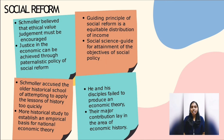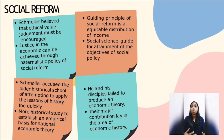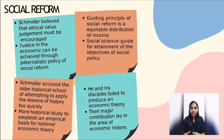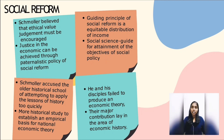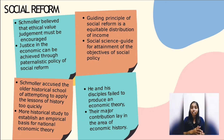Regarding social reforms, Schmoller believed that ethical value judgments are to be encouraged. Justice in the economic system is to be realized through a paternalistic policy of social reform furthered by the state and all social groups, with the guiding principle being more equitable distribution of income. Social science is to be the guide for attaining the objectives of social policy. Schmoller accused the older historical school of attempting to apply the lessons of history too quickly and called for much more historical study to establish an empirical basis for national economic theory. Yet despite the innumerable massive historical studies he and his disciples published, they failed to produce an economic theory, and their major contributions lay in the area of economic history only.